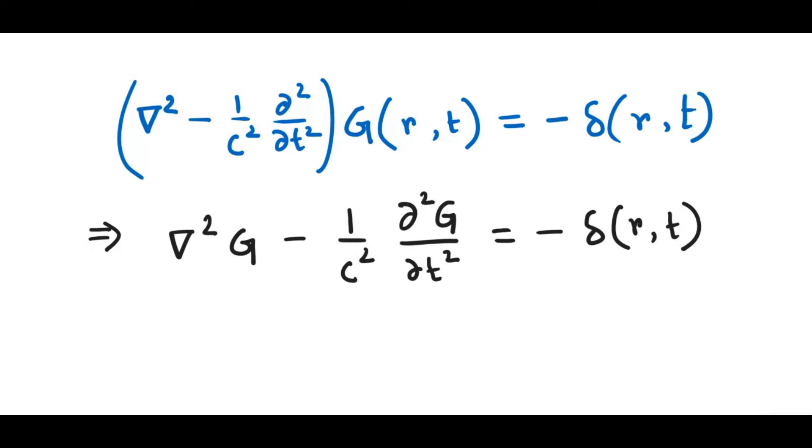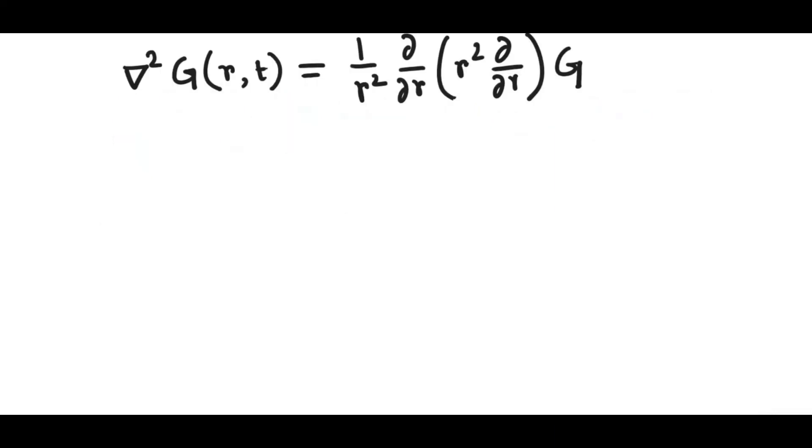Now, if we expand this portion in the spherical coordinate, then this is basically the Laplacian of G, and since G depends on R only and not theta and phi, we write 1 over R squared, dR, acting on R squared, dR, which is acting on G.